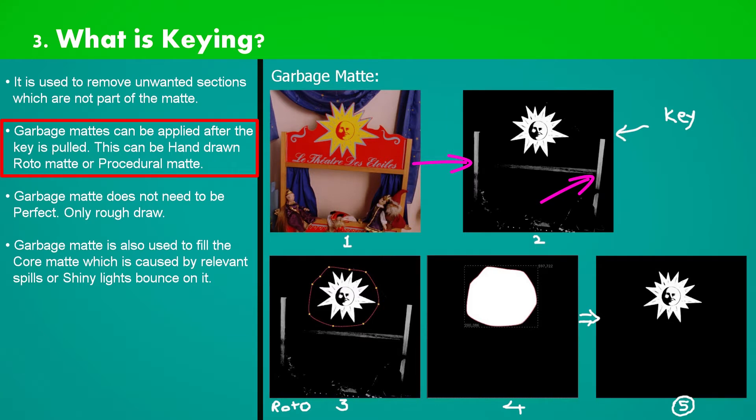So we want to remove those unwanted sections. The answer is using garbage matte. Drawing roto shape around our selected mat, and drawing the roto shape doesn't need to be perfect at all. Only rough draw.